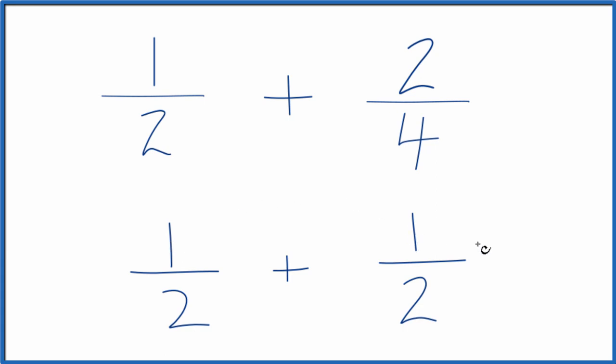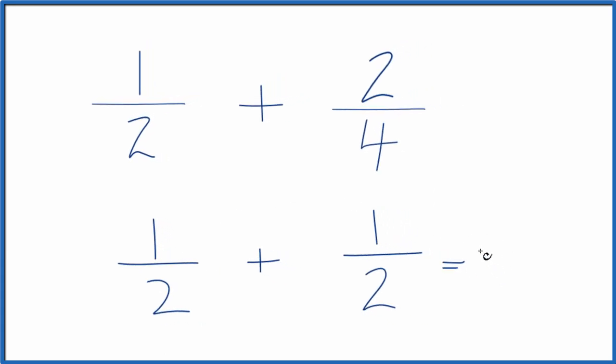1 plus 1, that equals 2. Then we bring the 2 across and we get 2 halves. 2 divided by 2, that just equals 1. So 1 half plus 2 fourths, that equals 1.